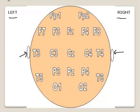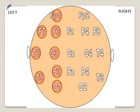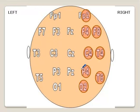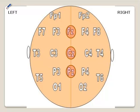When you are looking at this recording, you will note that all the odd numbers — 1, 3, 5, 7 — are recording activity from the left side. All the even numbers are recording activity from the right side. And electrodes which end with the letter Z are recording activity from the midline.